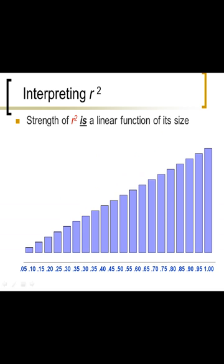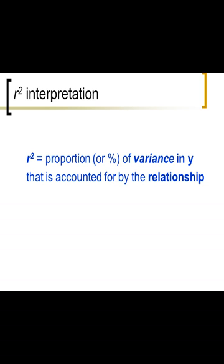So R squared is linear. This is how R squared works. It's always positive because it's squared. And the interpretation, R squared is the proportion or percentage of variance in Y, we don't say variability in Y, that is accounted for, or we could say due to or explained by, the relationship between X and Y.